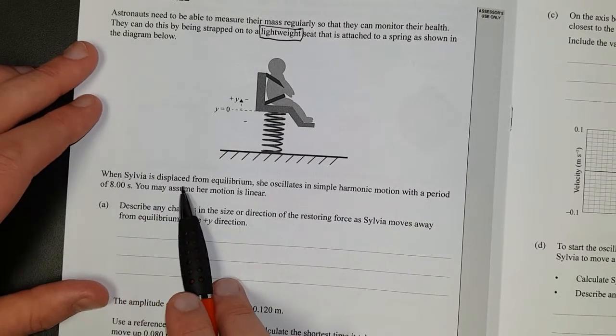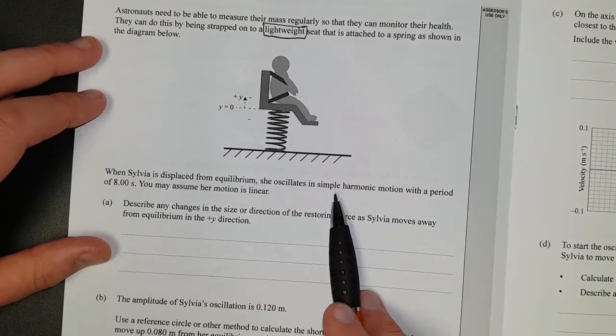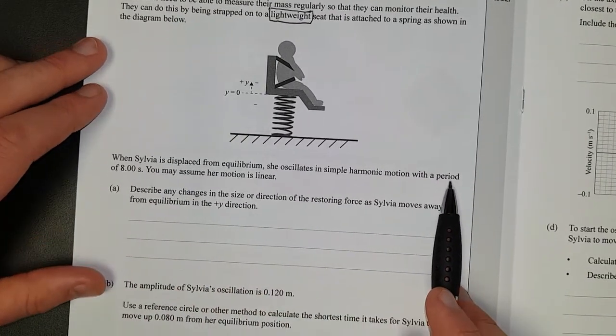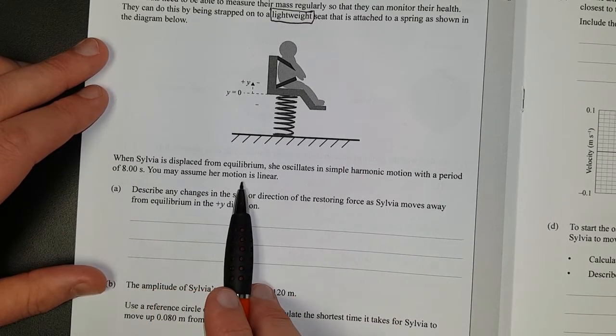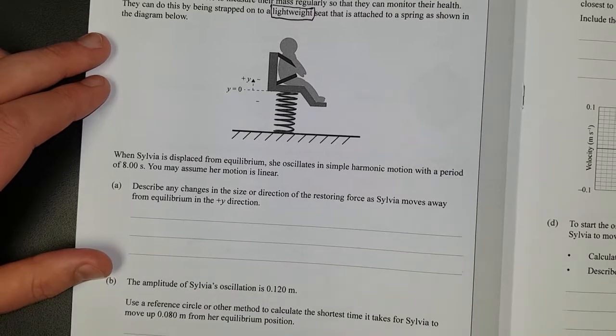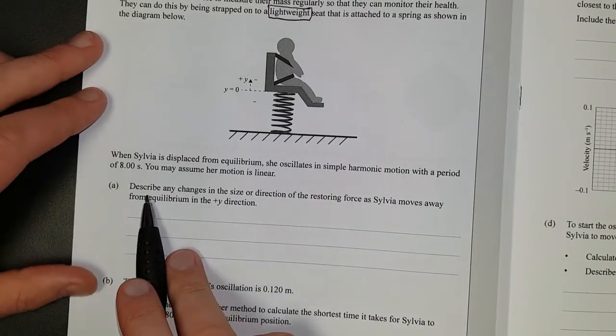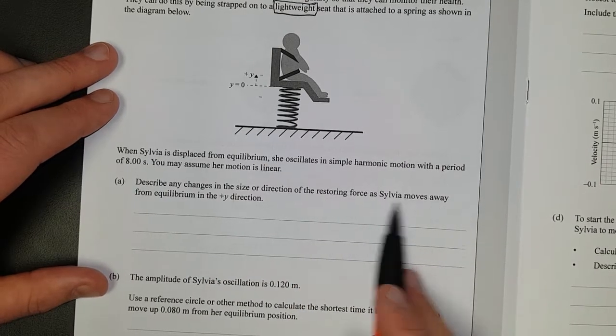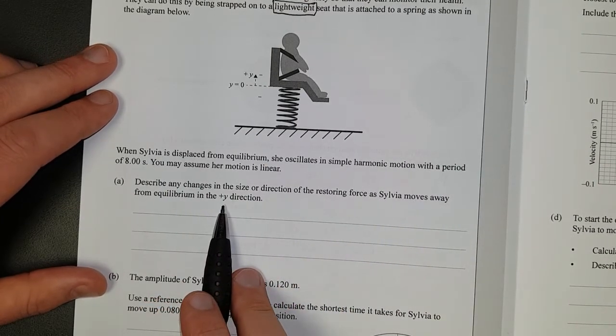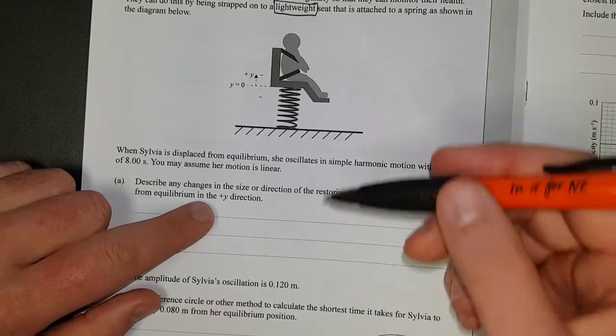When, oh it's Sylvia again, is displaced from equilibrium, she oscillates in simple harmonic motion with a period of 8 seconds. You may assume her motion is linear. That's good, otherwise it's not SHM. Describe any changes in the size or direction of the restoring force as Sylvia moves away from equilibrium in the positive Y direction. So she's going up.